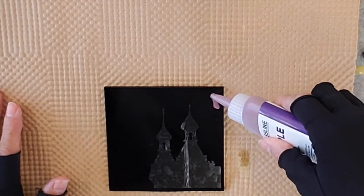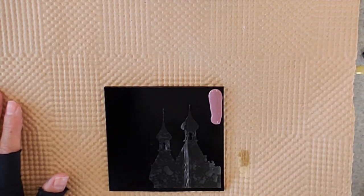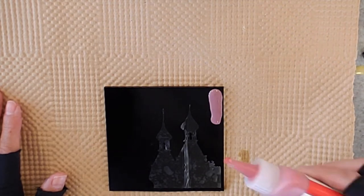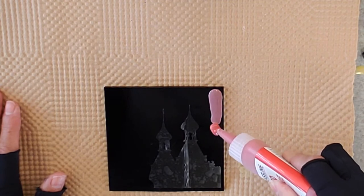Now that my stencils are applied I am ready to use my paint. I am using three colors so I'm applying a small puddle of each at the edge of my glass.